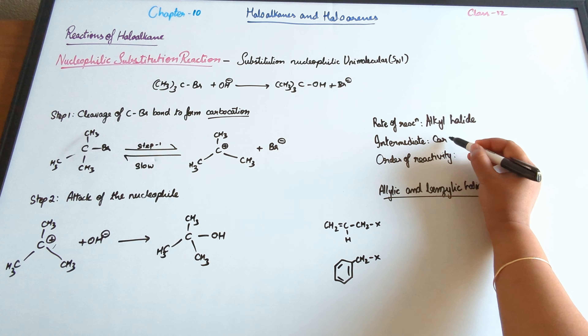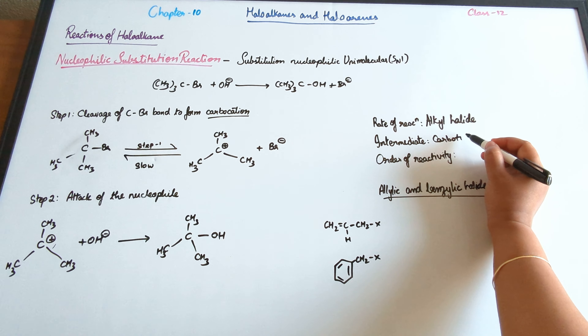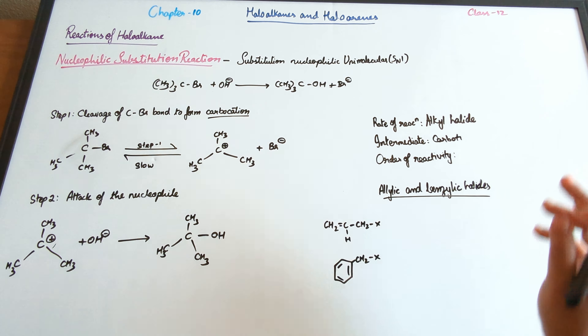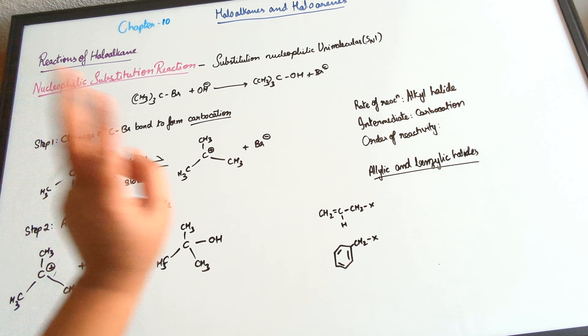The intermediate of this reaction is the carbocation. In the SN2 reaction it was the transition state, whereas in SN1 it is the carbocation.